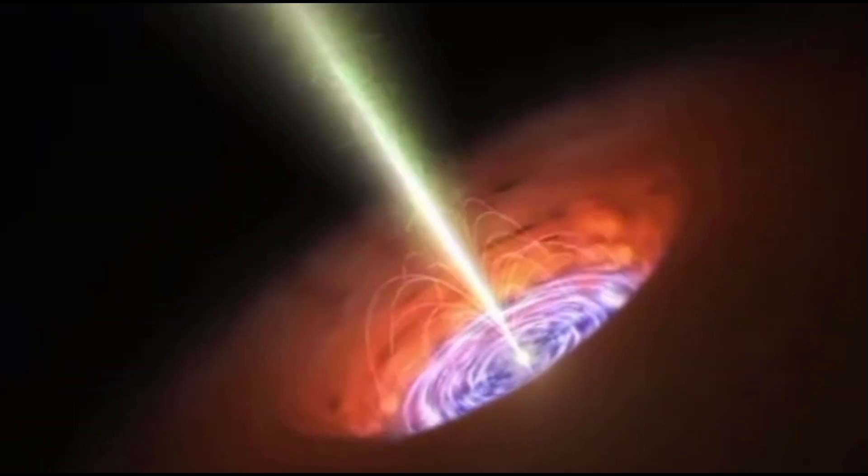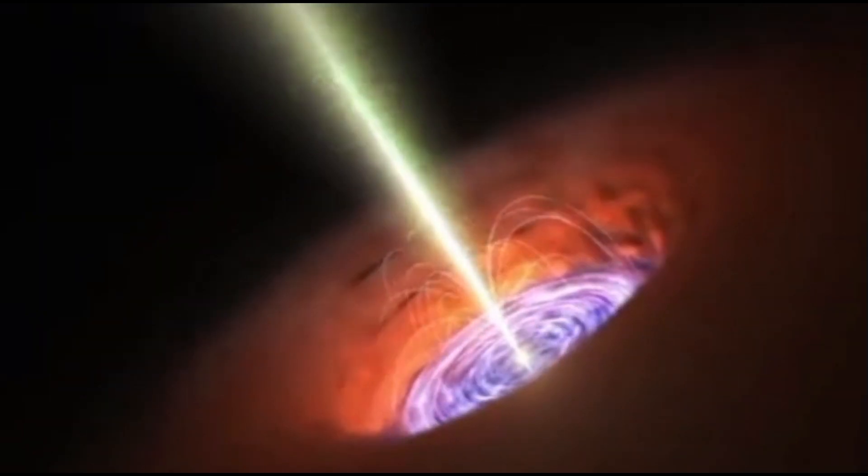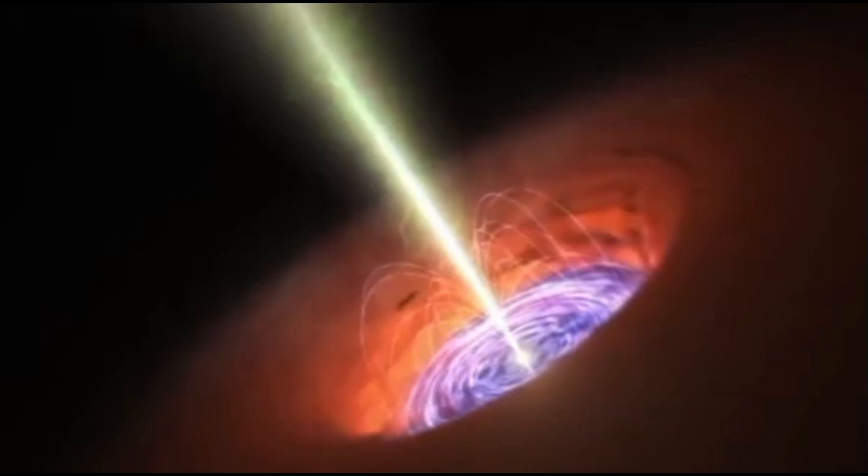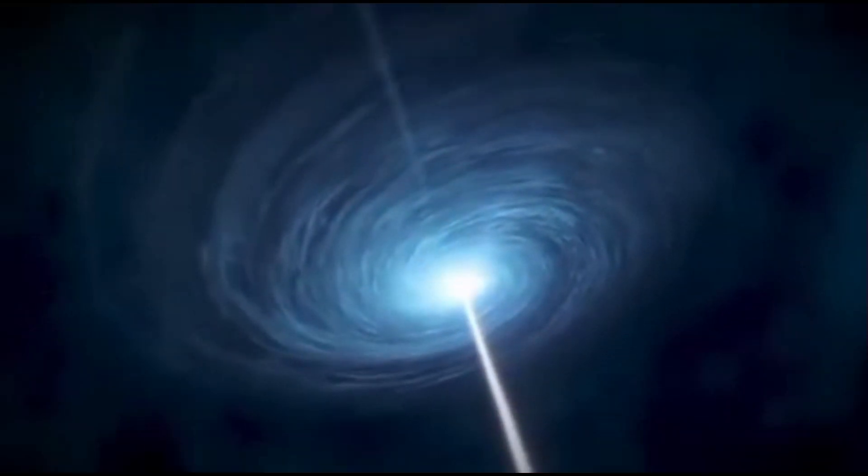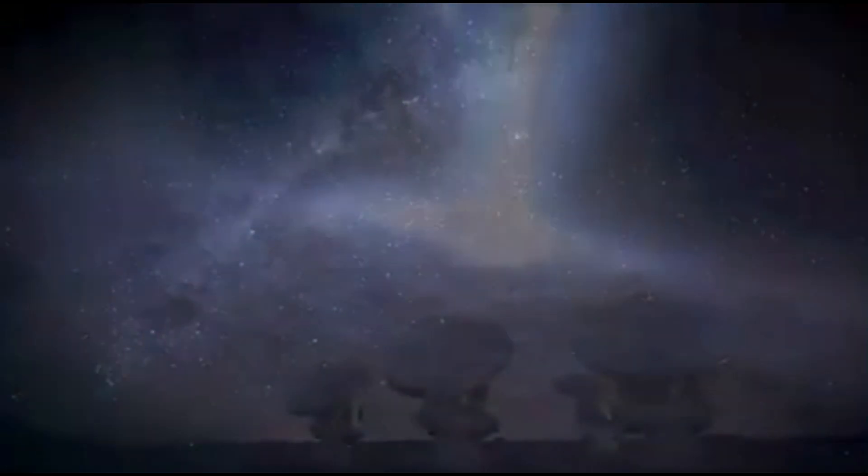Our sun is a middle-aged star, about 4.6 billion years old, with a few billion more years to go before it exhausts its nuclear fuel and evolves into a red giant. But black holes, they are eternal in a sense. They can outlive stars, galaxies, and even the universe itself.